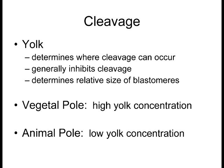The animal pole is the low-yolk area of an organism; the vegetal pole is the high-yolk area. Not all organisms have this disproportion of yolk — humans don't have significant yolk concentrations. These factors predetermine the cleavage pattern of each embryo.